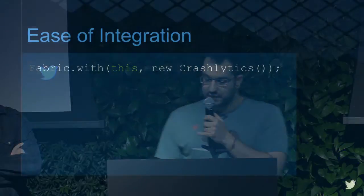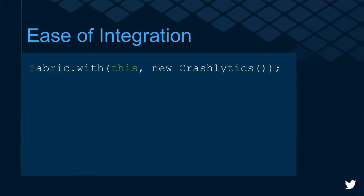From the very beginning we decided that Fabric had to be easy to use, so we made conscious decisions during its design. An example is this one line here — we wanted the easiest way possible to start Fabric. Fabric initialization is just this one line. You just need to pass the Android context and then the kit or kits that you want to use, and then just run with it.